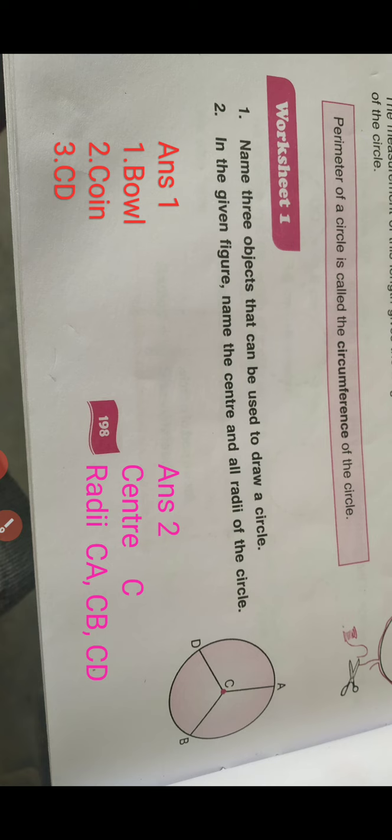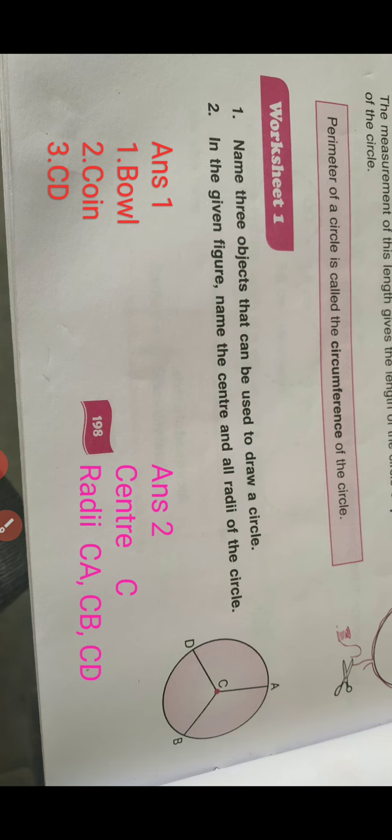Center is the point where we place our compass to draw the circle. So, in this figure the center is C. Radius is the distance from center to any point on the circle. Here three points are A, B and D.